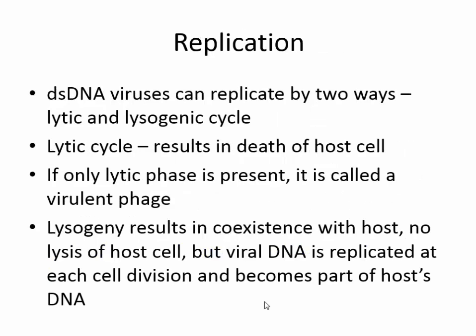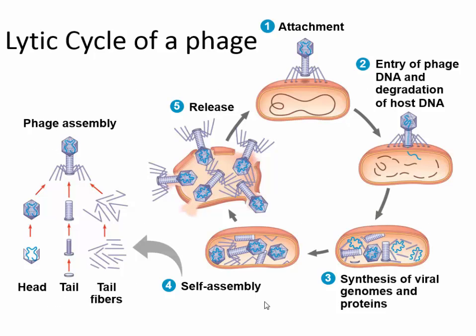Double-stranded DNA viruses can replicate by two pathways: the lytic cycle or the lysogenic cycle. The lytic cycle always results in the death of the host cell; a phage that uses only the lytic phase is called a virulent phage. In the lytic cycle diagram: the virus lands on a bacterium, burrows into the cell wall, takes over, synthesizes viral genomes and proteins that spontaneously self-assemble, and then the host cell membrane bursts, releasing hundreds to thousands of viruses that go on to infect other cells.